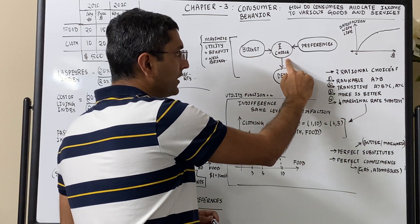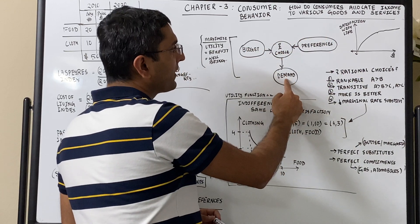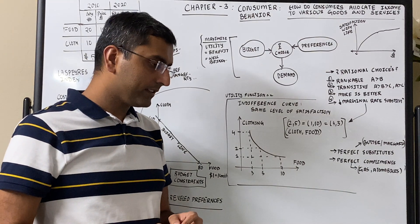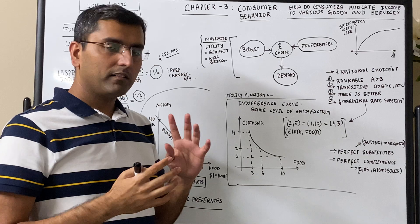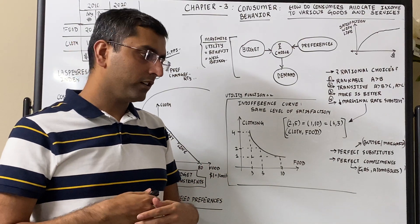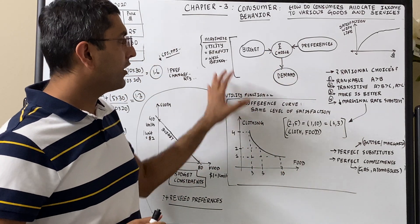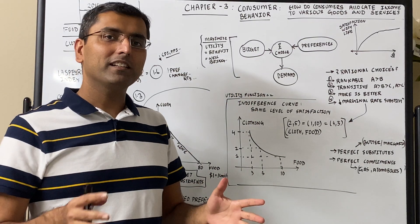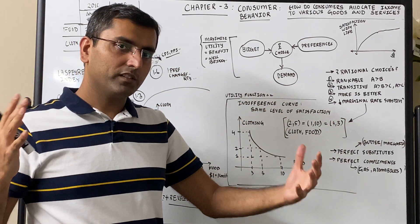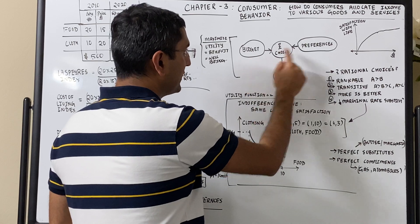Understanding the budget, choices, and preferences is the basis of demand. Are all choices rational? That's a very deep topic — behavioral economics — which is a separate topic altogether. Not all choices are rational, but let us assume that they are. People often make choices based on where they live, their neighbors, friends, and culture. But let's assume choices are rational, meaning the consumer will maximize for their happiness and well-being independent of irrational influences. So demand breaks down into three big areas: choices, budgets, and preferences.